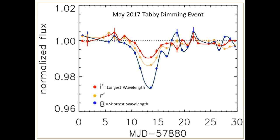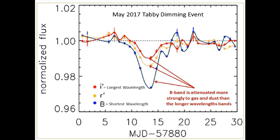This graph shows the short-term dimming event of Tabby's Star in May of this year, 2017, and there were three different filters being used to measure the flux. The red curve in the graph represents the flux with the longest wavelength band pass, and the blue line represents the filter with the shortest wavelength band pass. We bring this graph up to show that different wavelengths of light are attenuated or decreased differently based on the material that is blocking, absorbing, or scattering the light.